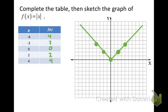It makes sense that the outputs for every input value will be positive. So we end up with this V-shape where all the y-values are positive, except of course when you plug in 0. Now that you know the shape, I want to discuss a couple of the properties of the graph.